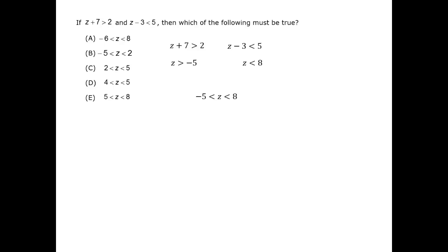Similarly, since we know that minus 5 is less than z which is less than 8, z could be 7 or 7.5. So B need not be true.